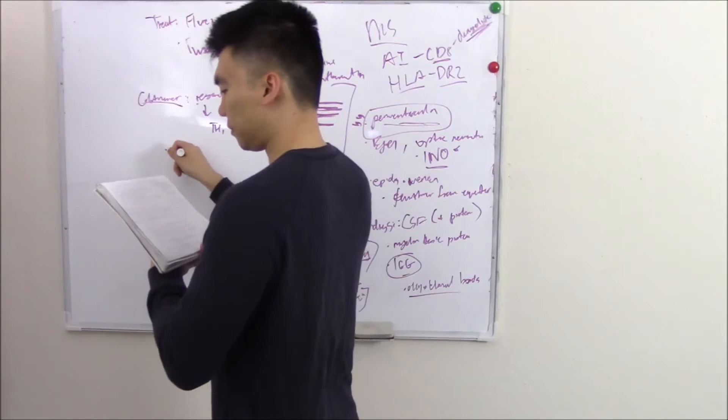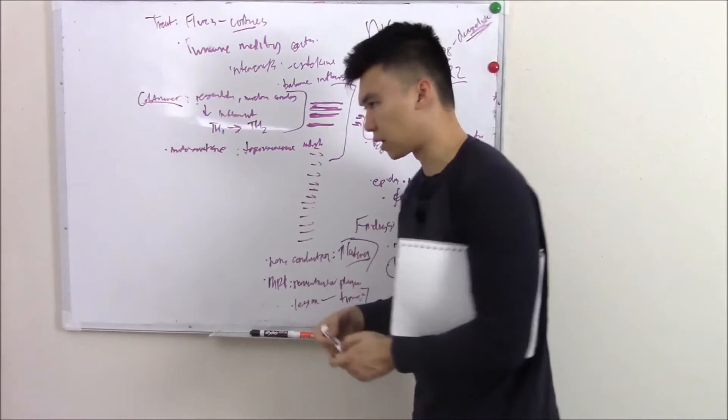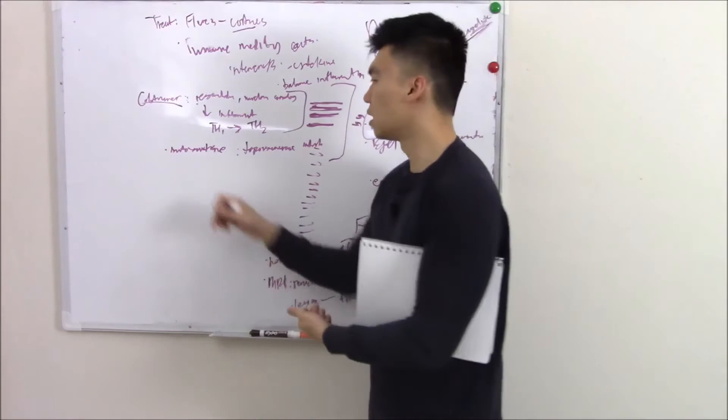You have mitoxantrone. Mitoxantrone is a topoisomerase inhibitor. Depending on whether you've done heme and onc, you know that topoisomerase inhibitor is a chemo drug. It basically stops cells from proliferating. In this case, it'll stop your immune cells from proliferating because they have a really short half-life—they're always proliferating.